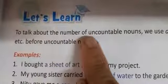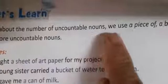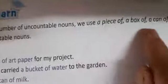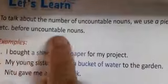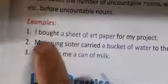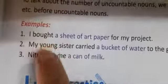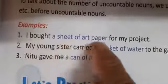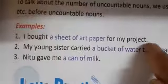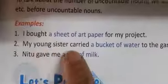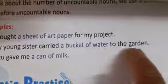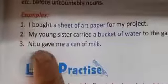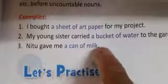To talk about the number of uncountable nouns, we use a piece of, a box of, a can of, etc. before uncountable nouns. Examples: I bought a sheet of art paper for my project. My young sister carried a bucket of water to the garden. Neetu gave me a can of milk.